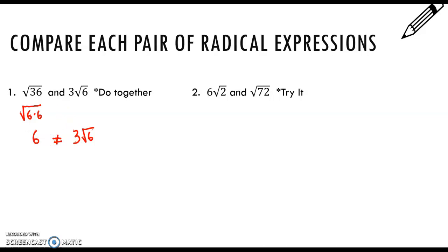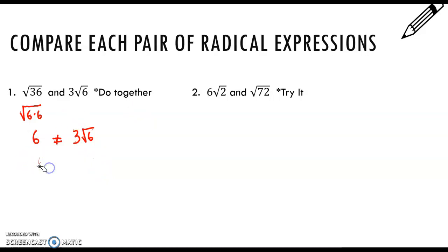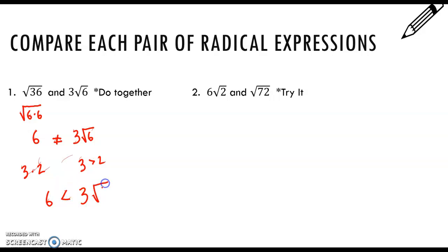The square root of 6 is between 2 and 3, so 3 times a number a little bit bigger than 2 is going to be bigger. 6 is 3 times 2, but this thing is 3 times a number bigger than 2. So we know that 6 is smaller than 3 root 6 — it's not equal to 3 root 6, and it's actually smaller.